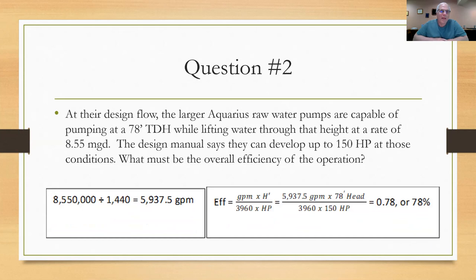I converted that 8,550,000 gallons per day divided by 1440. I come up with 5937.5 gallons per minute and you need that for your horsepower problem. When I was not looking for horsepower because they gave that to me at 150, I'm looking for the efficiency. So I switched those out. I took the efficiency out of the denominator and put that on the left side of the equation, brought my horsepower down to the denominator and worked through, plugging in the numbers, and I come up with a 78% efficiency. Hope you got that because you're going to need it for the third problem.